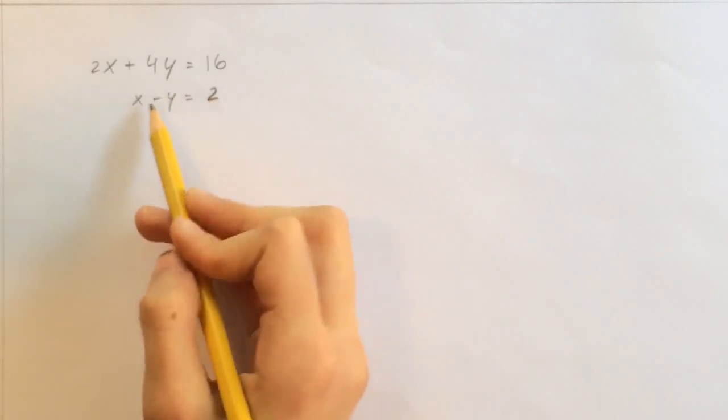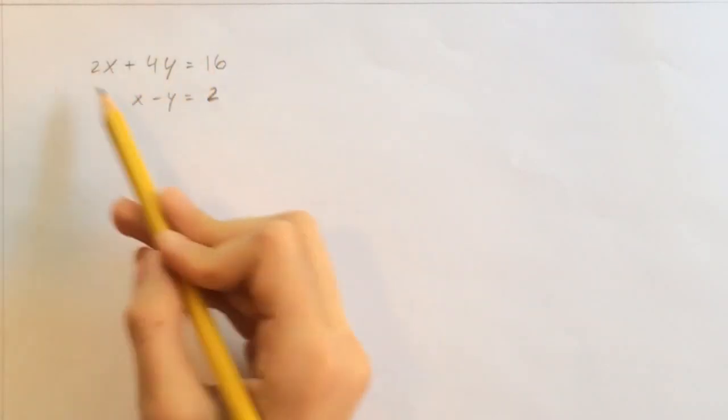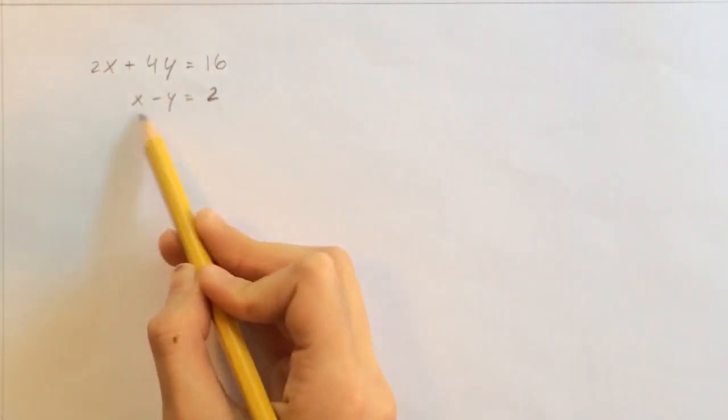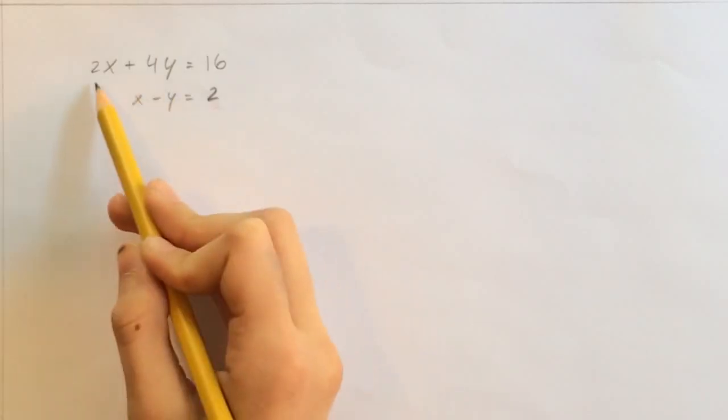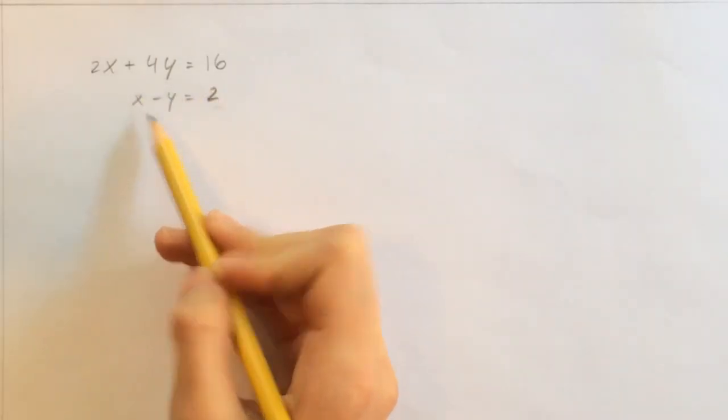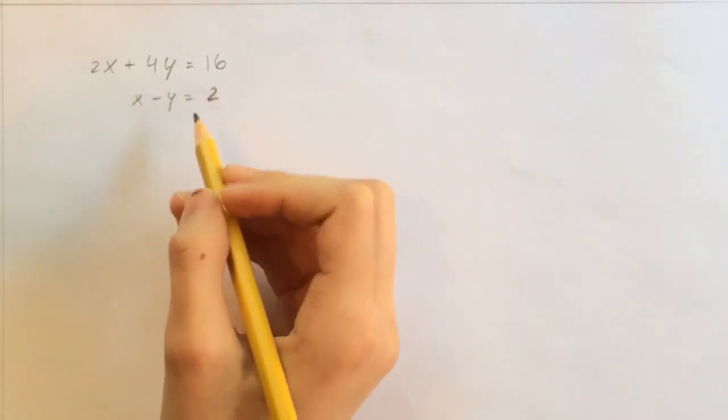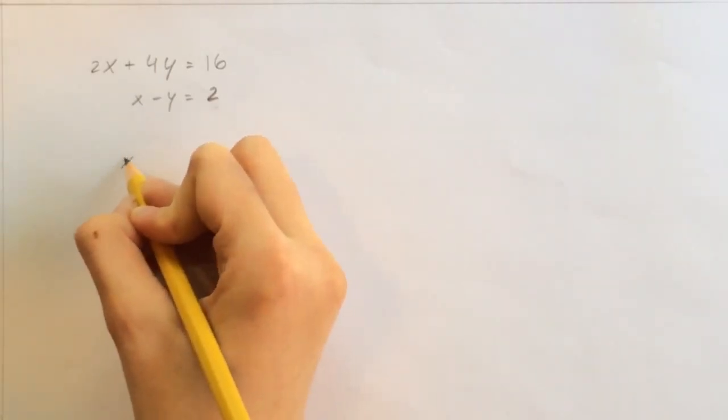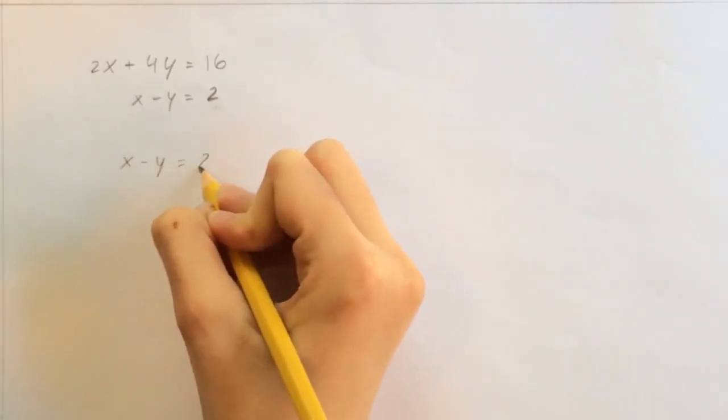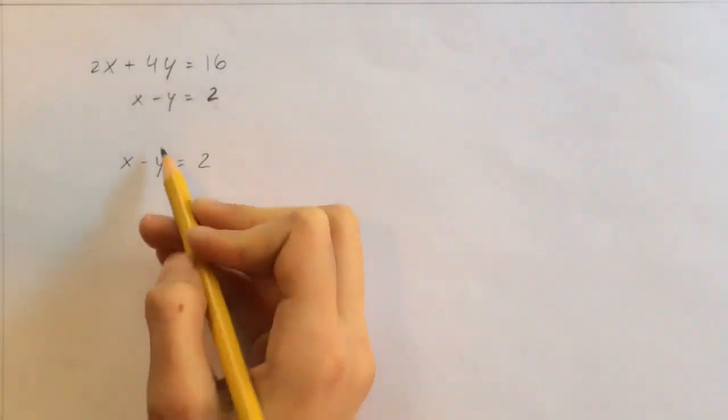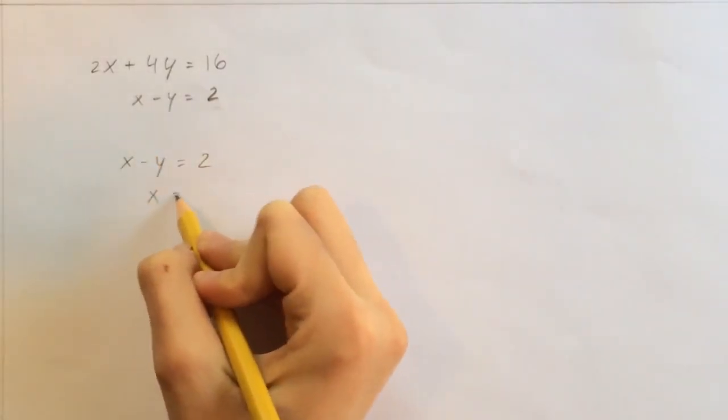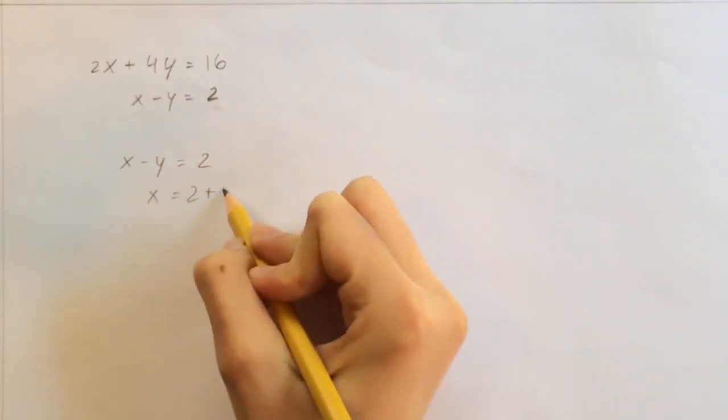So we're going to start by isolating for x. And we can do this on either of the two formulas, but you can see on this formula it looks a lot easier to isolate for x than that one. So if we look at this formula right here, x minus y equals 2, you can tell that x equals 2 plus y.